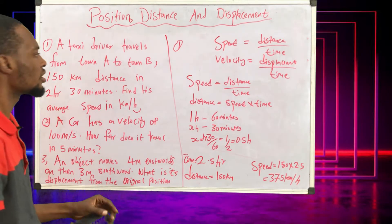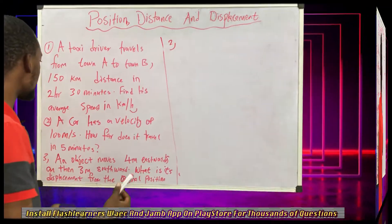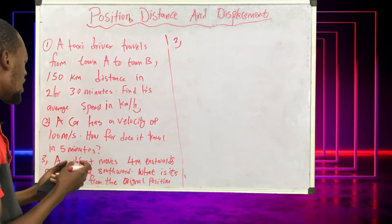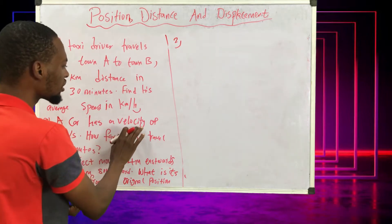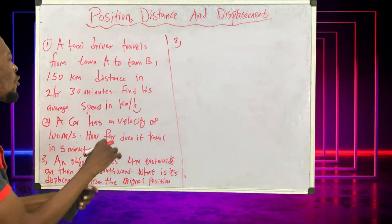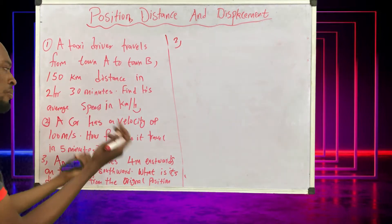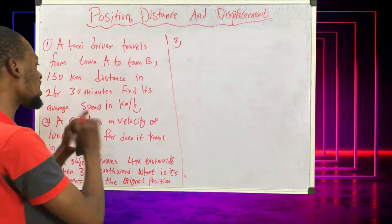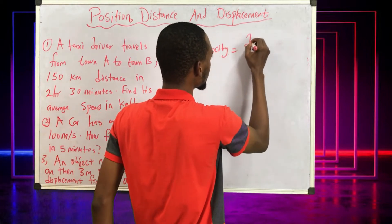Looking at question two: a car has a velocity of 100 meters per second — how far does it travel in five minutes? When you see velocity, displacement comes in because displacement is used to calculate velocity. Anytime you see speed, distance comes to mind. In this case we are required to calculate displacement, because velocity equals displacement over time.